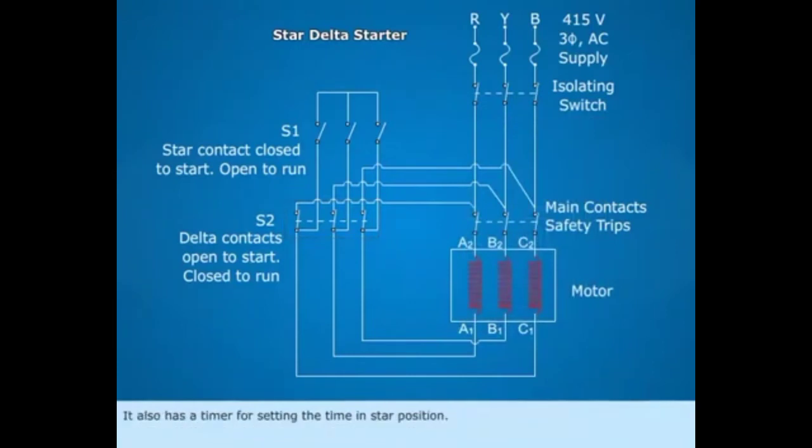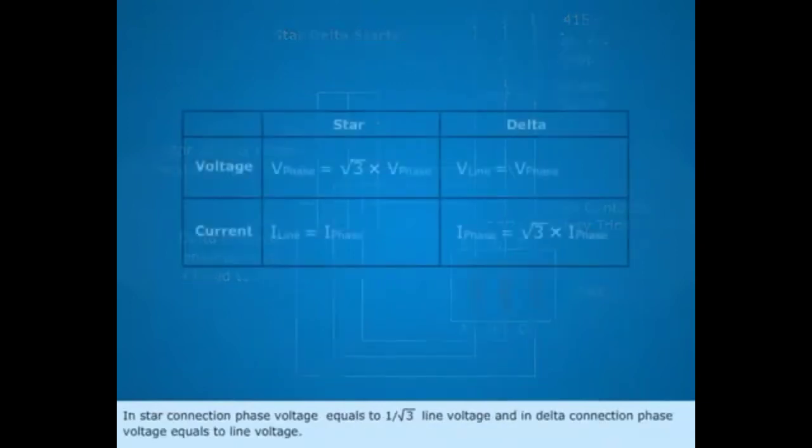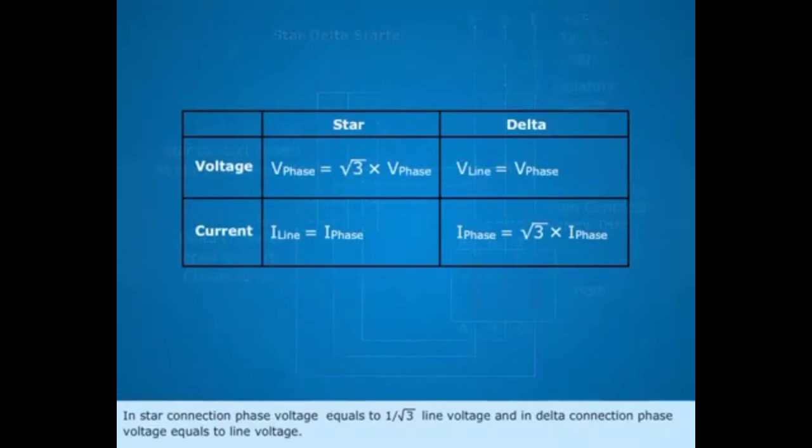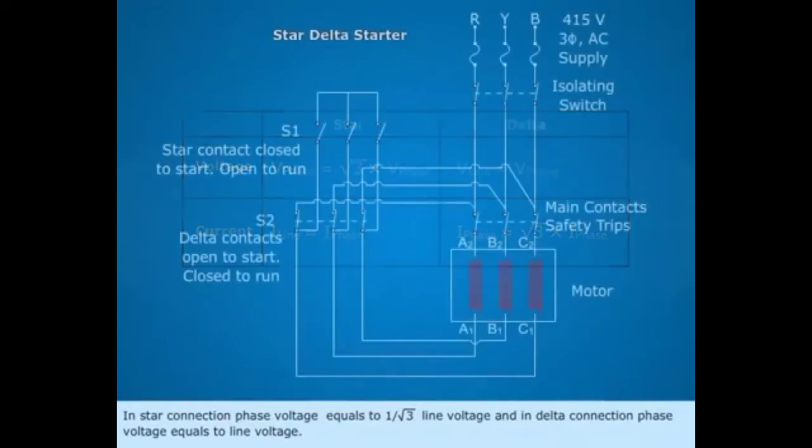It also has a timer for setting the time in star position. In star connection, phase voltage equals 1 by root 3 line voltage, and in delta connection, phase voltage equals line voltage.